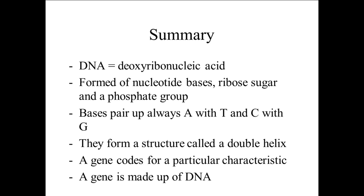The bases always pair up in a particular way: adenine always binds to thymine, and cytosine always binds with guanine. They form a structure called a double helix, which looks like a coiled spring. A gene codes for a particular characteristic such as eye color or hair color, and a gene is made up of many pieces of DNA — in some cases up to tens of thousands of pieces.